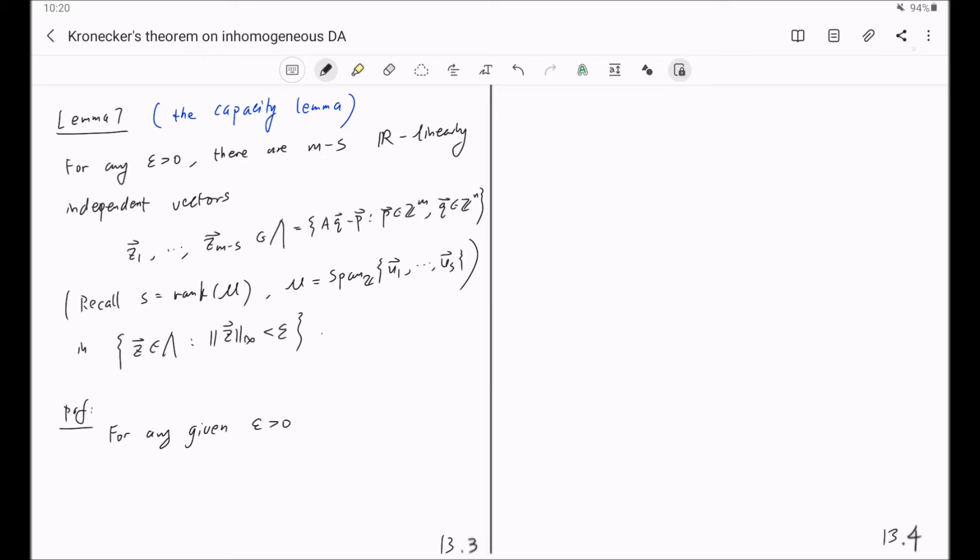we will construct Z1 through Z M minus S successively. Suppose we have already constructed T vectors Z1 through ZT, where T is greater or equal to zero, less than M minus S. So you can see this as our induction hypothesis.